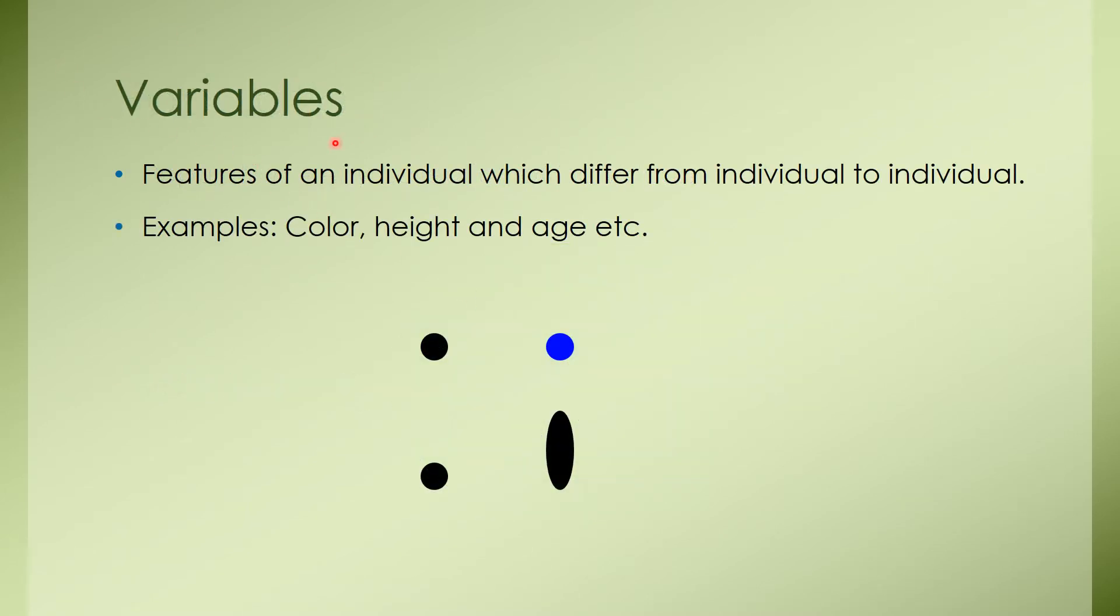So variables are features or characters of an individual which differ from individual to individual. So variables can be color, height, age, sex, etc. If you take these two individuals, one is black, other one is blue, so the color is the variable. Over here, one is shorter than the other, so height is the variable.